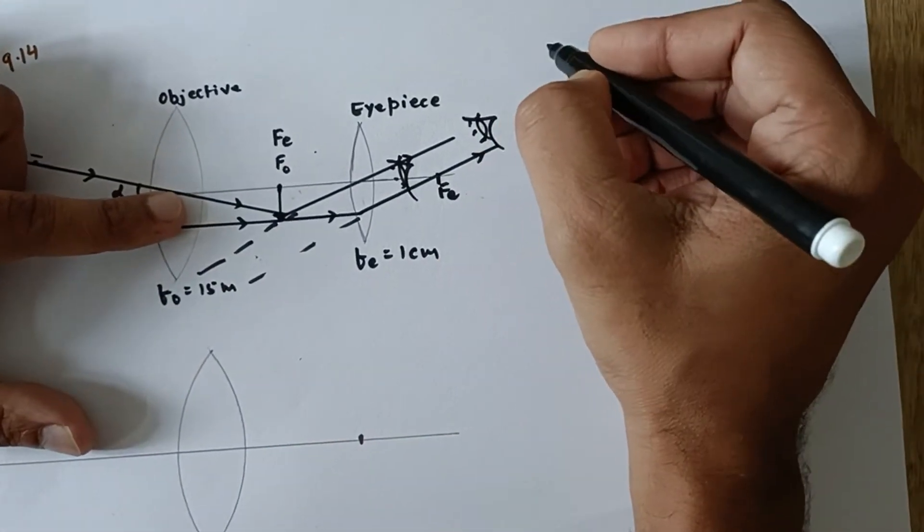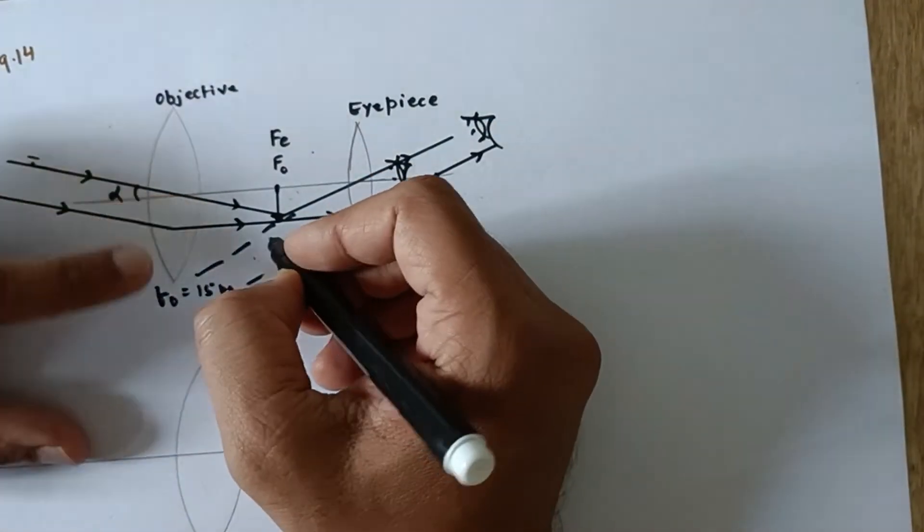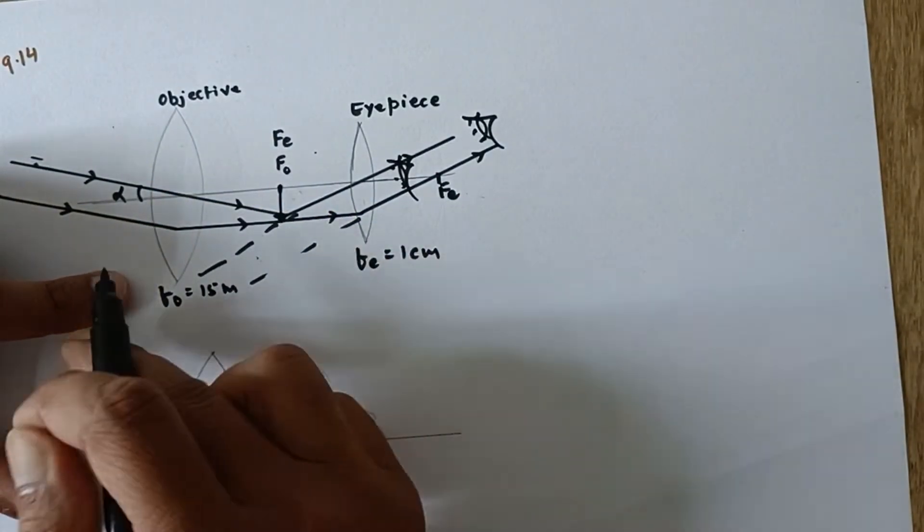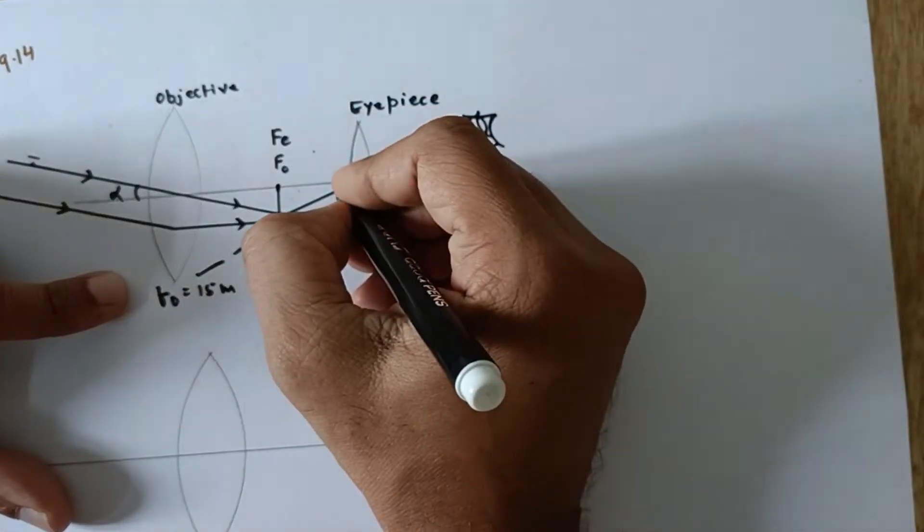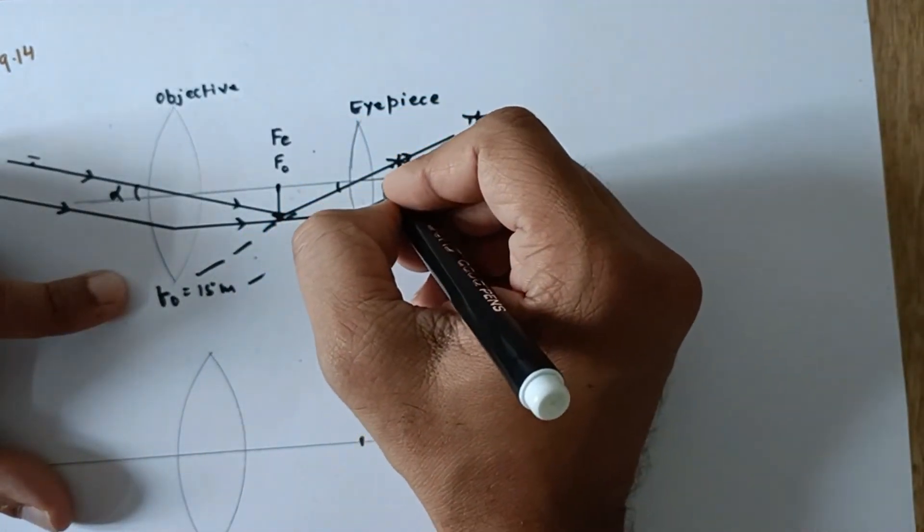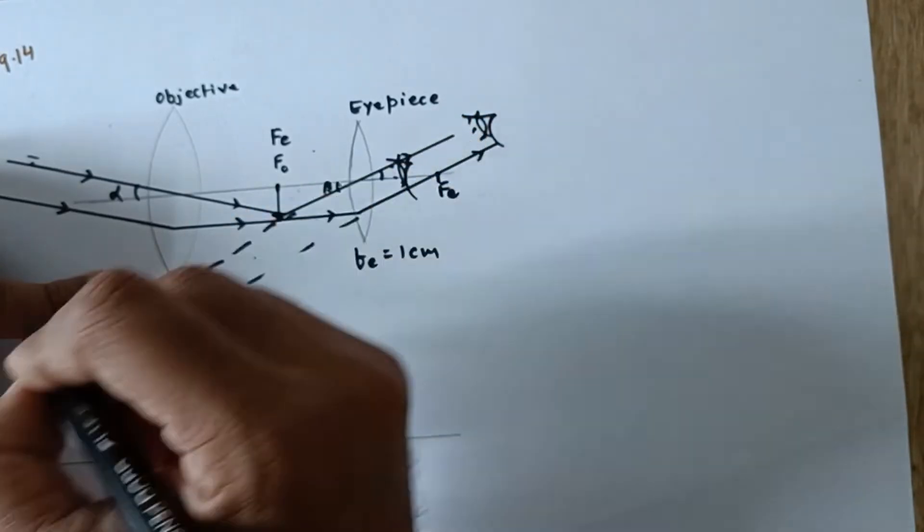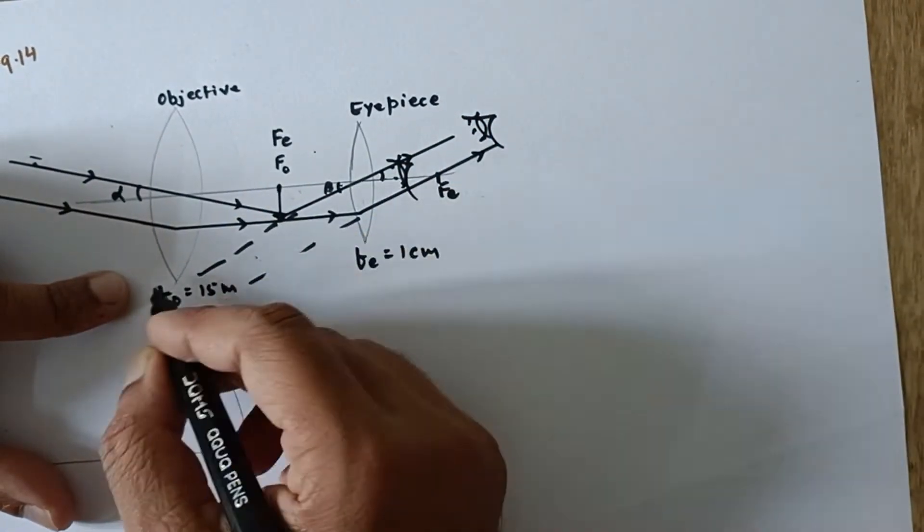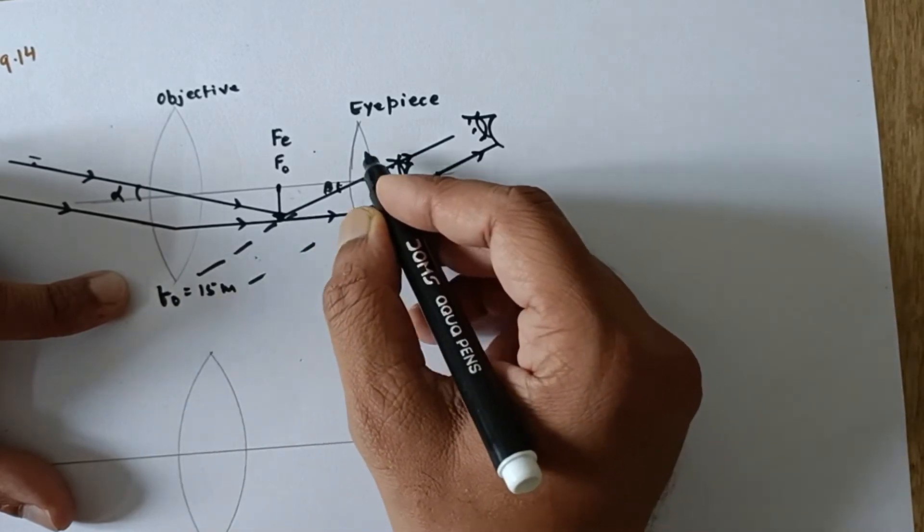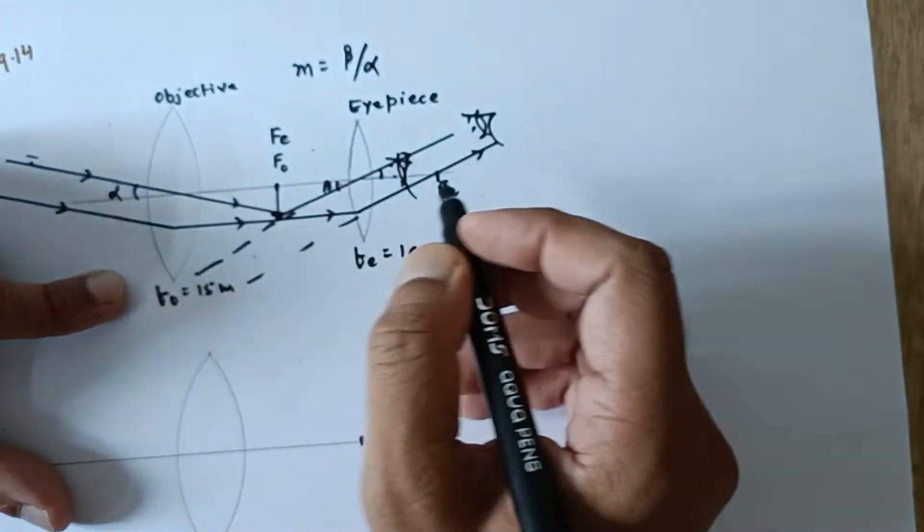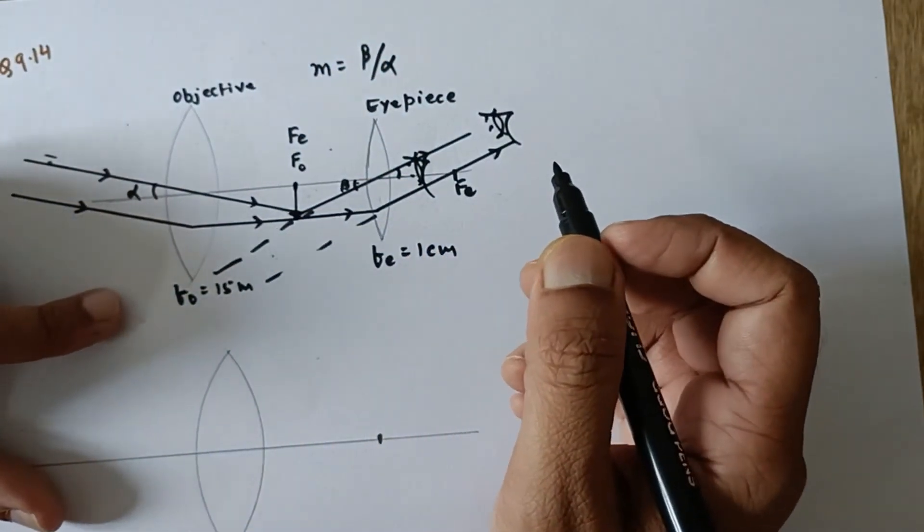In this particular case, the magnifying power, I left the problem in between since this angle is alpha. And since the final image is going to make some angle beta with respect to the eye, because these two angles are same. Let's call this angle as beta. The final image makes some angle beta with the lens or the eye. So the ratio of beta to alpha is known as angular magnification.